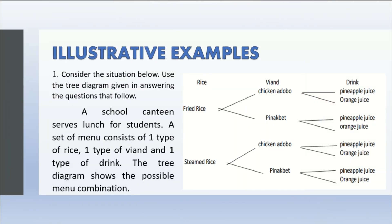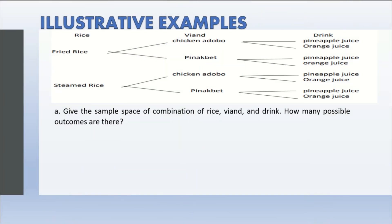Example number one. Consider the situation below — use the tree diagram given in answering the questions that follow. A school canteen serves lunch for students. A set of menu consists of one type of rice, one type of viand, and one type of drink. The tree diagram shows the possible menu combinations. For rice, we have two choices: either fried rice or steamed rice. For viand, we have chicken adobo or pinakbet. And for drinks, we have pineapple juice or orange juice. Give the sample space of combinations of rice, viand, and drink. How many possible outcomes are there?